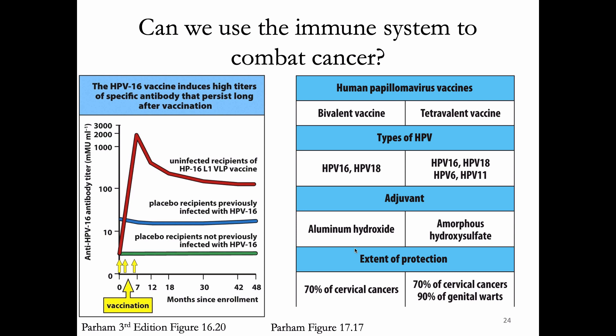Can we use the immune system to combat cancer? In the case of viral cancers, yes — the HPV vaccine is a subunit vaccine made of HPV proteins that induces high levels of anti-HPV antibodies. The first HPV vaccine provided protection against 70% of cervical cancers, more recent ones add protection against 90% of genital warts, and even newer versions cover more serotypes with greater effectiveness.